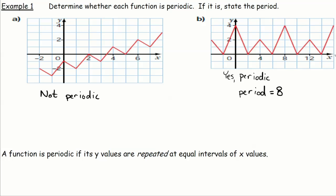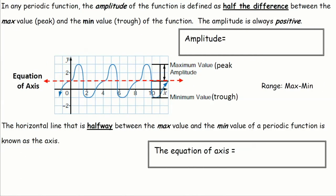We'll now look at a couple more important definitions for periodic functions. The first is amplitude. The amplitude of a function is defined as half the difference between the maximum value and the minimum value of the function. It's important to remember the amplitude should always be a positive value. In our example, the maximum value is three and the minimum value is negative one. So three minus negative one equals four, divided by two, gives an amplitude of two.